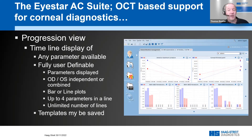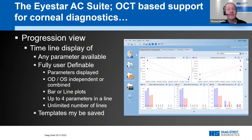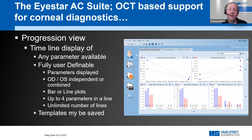A new feature about to be rolled out is the fully customizable progression view. Every parameter available in iSuite can be shown as a progression view, displayed as either a line plot or a bar plot, with right and left eye independent or merged. Here we see an example with anterior maximum curvature (K-max) and the sinus coordinates as line plots, and on the second line the parameters from the ABCD keratoconus grading by Belin are on display, showing how these parameters changed as the patient was measured over several time points.